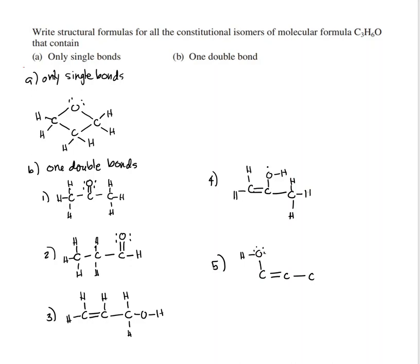The oxygen has two lone pairs, with one H on one carbon, one H on another, and three H's at the carbon on the right side. Those are all the constitutional isomers of C3H6O with one double bond.